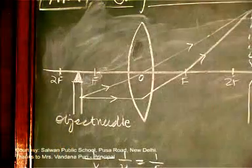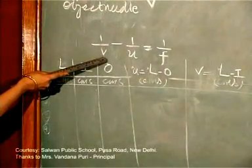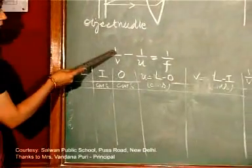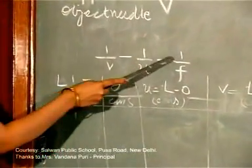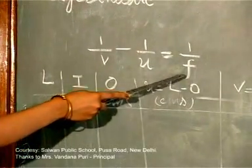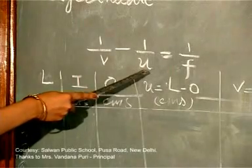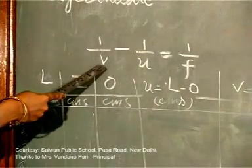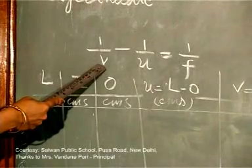A table like this will be prepared, based on the lens formula. This is the lens formula: 1/v minus 1/u is equal to 1/f. In the case of a convex lens, the object distance u is always considered negative and the image distance v is always positive, because the image is always formed on the other side of the lens.